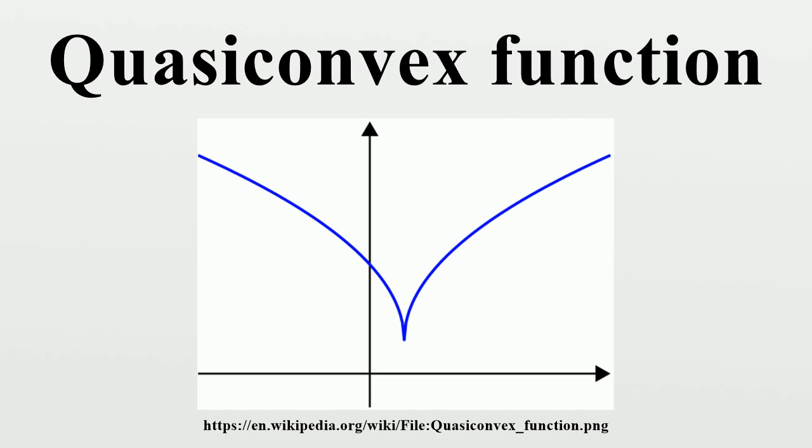In theory, quasi-convex programming and convex programming problems can be solved in reasonable amount of time, where the number of iterations grows like a polynomial in the dimension of the problem.